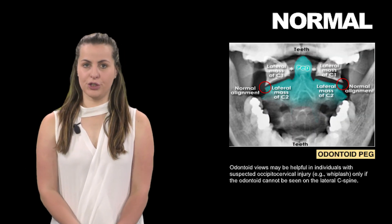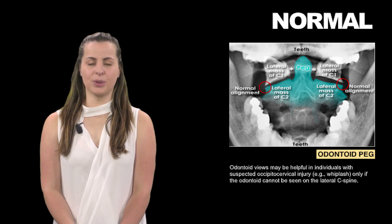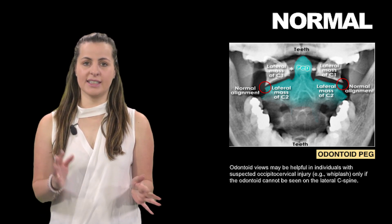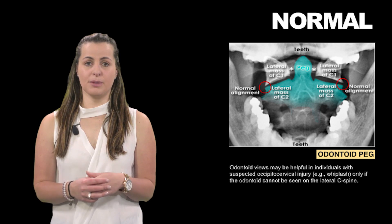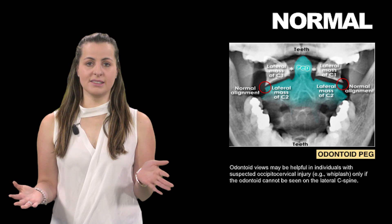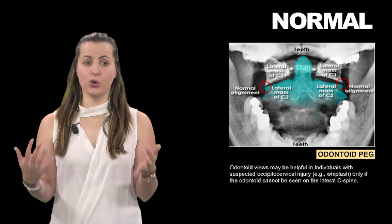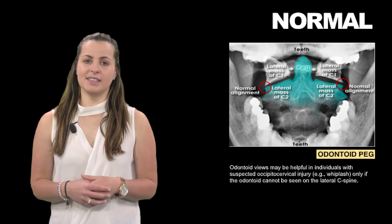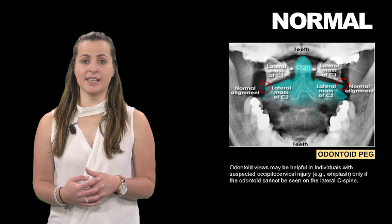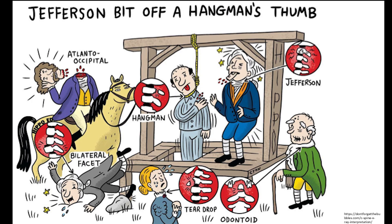The odontoid peg or open mouth view is considered adequate if it shows the alignment of the lateral processes of C1 and C2. The distance between the peg and the lateral masses of C1 should be equal on each side in a normal individual. Note that in this image the odontoid peg is fully visible, which is not often achievable in the context of trauma due to difficulty in patient positioning.